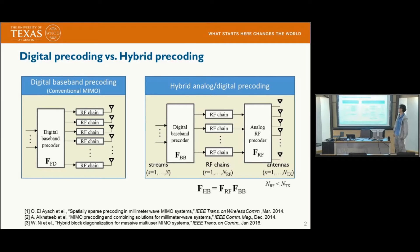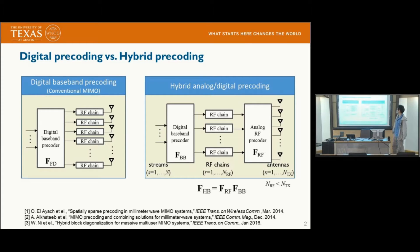Let's briefly review the hybrid pre-coding. The left figure shows the conventional MIMO, such as the digital baseband pre-coding, and the right figure shows the hybrid analog-digital pre-coding. In the conventional MIMO systems, the pre-coding is performed in the baseband, and each antenna requires its own RF chain.